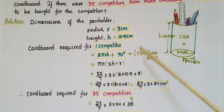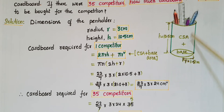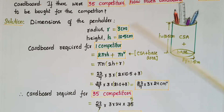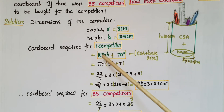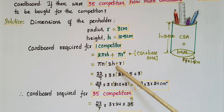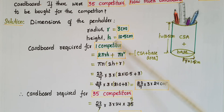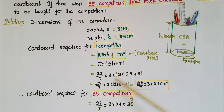Cardboard required for one competitor to make one pen holder includes the curved surface area plus the base area. Since it is cylindrical in shape, curved surface area equals 2πrh, plus the base is a circle so πr². This gives πr(2h + r), which equals 22/7 into r = 3, into 2h = 2 × 10.5, plus r = 3.